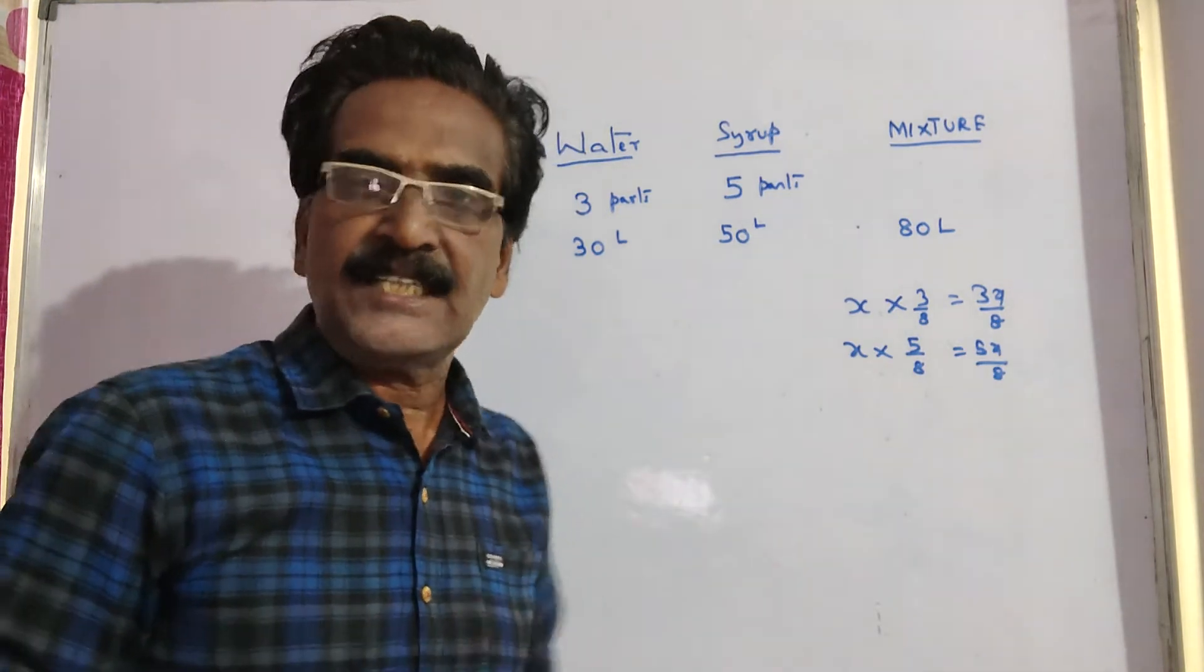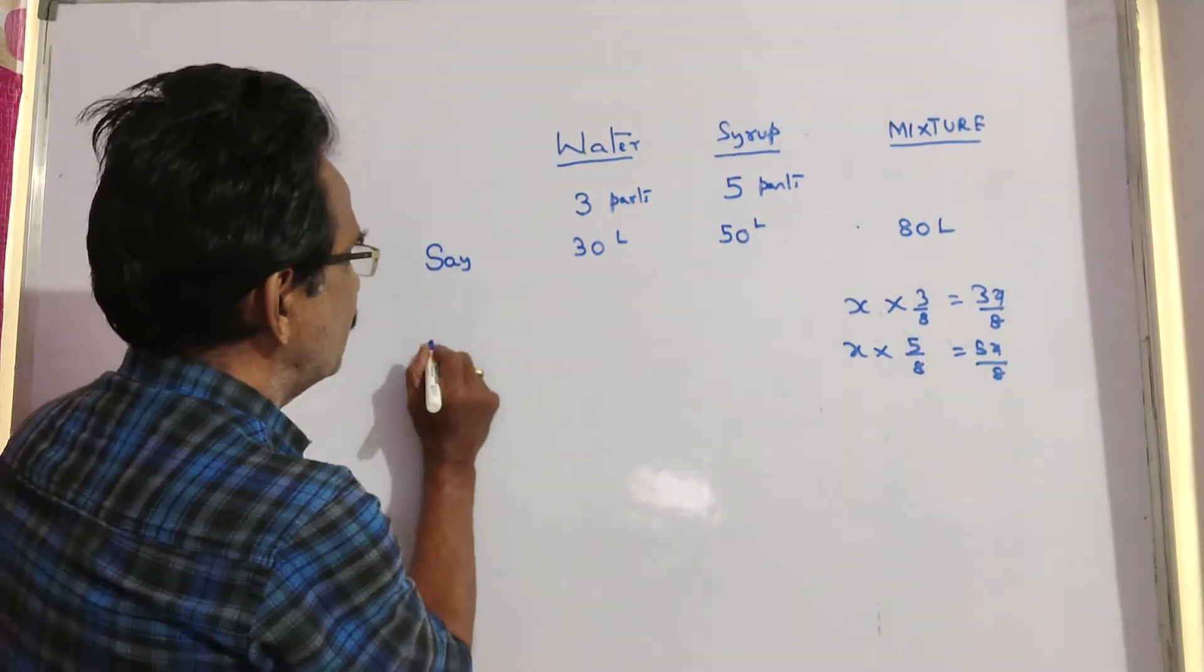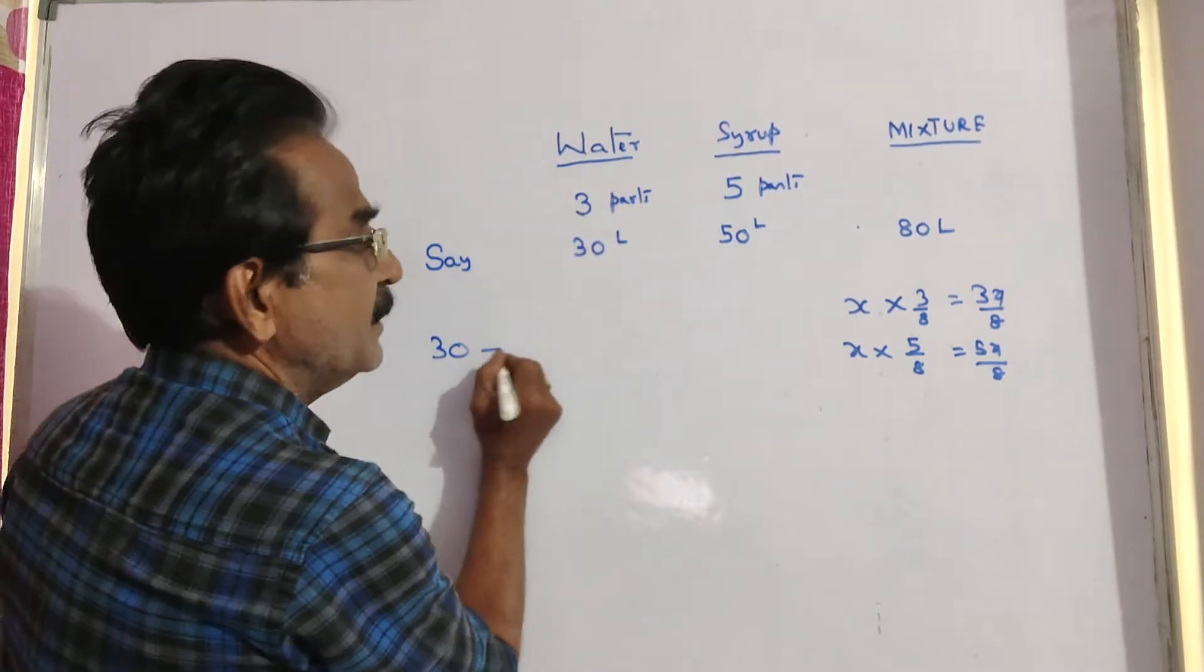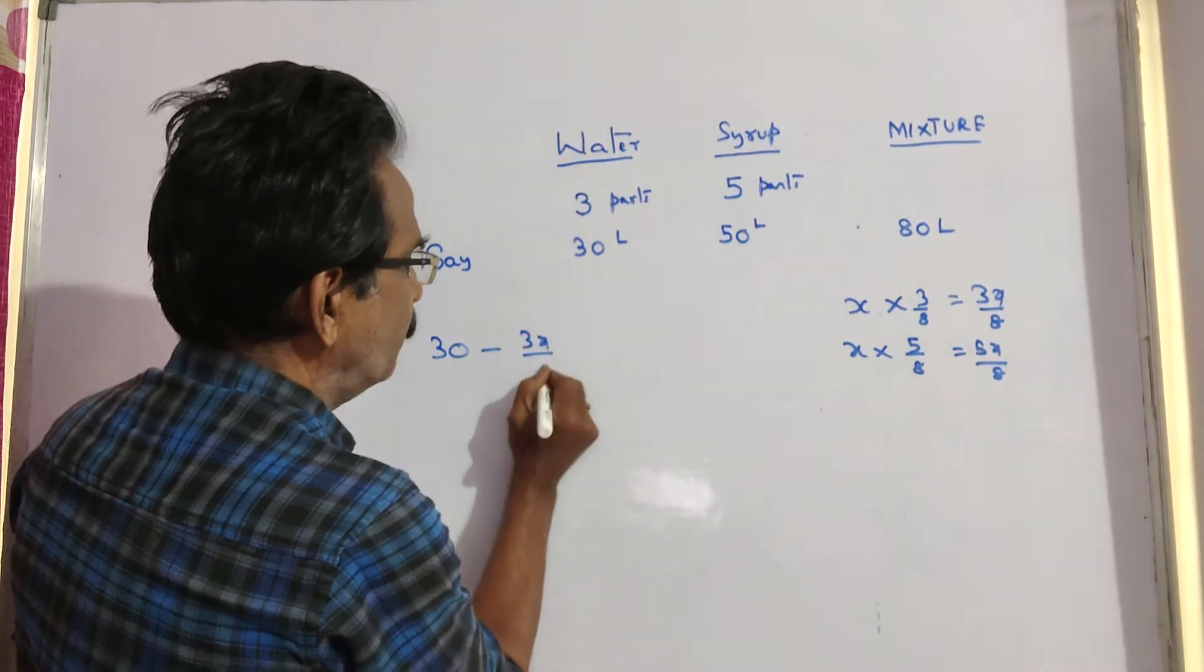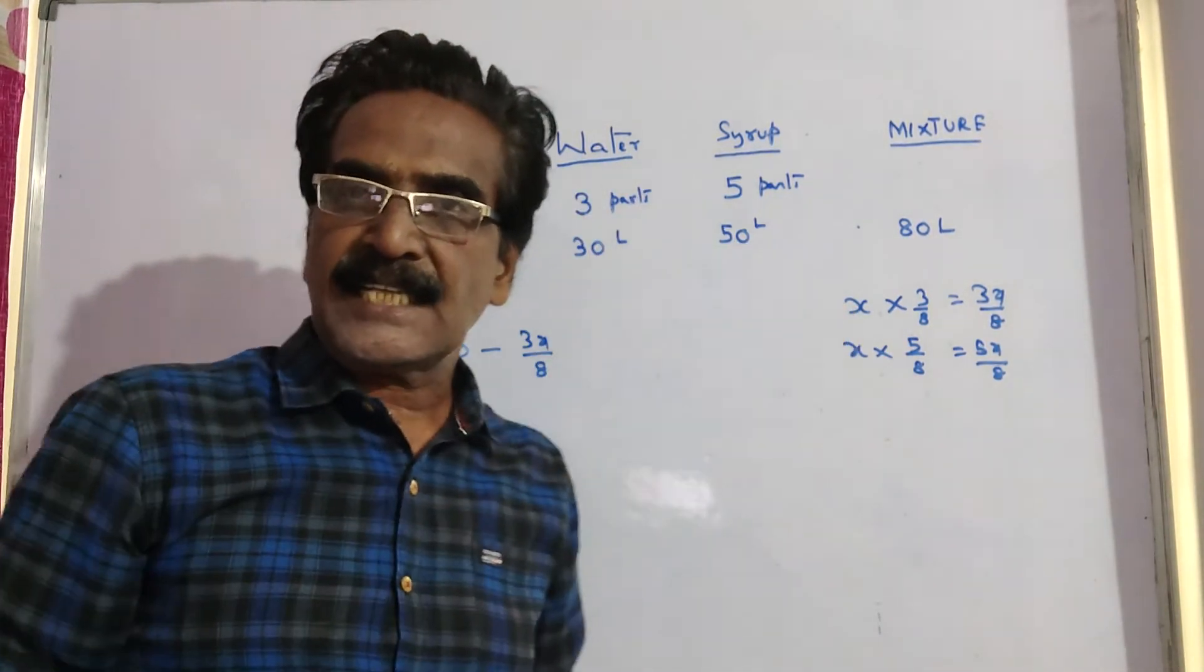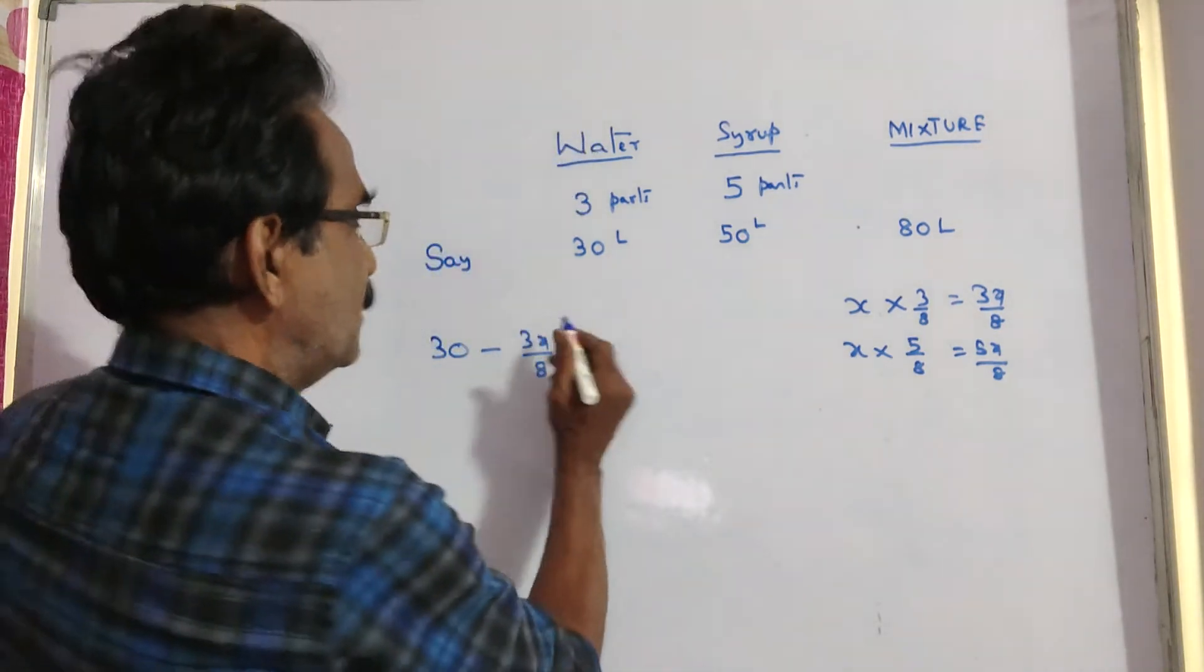Now, let us see the resultant quantities. Initially, there was 30 liters of water and 3x by 8 liters of water is drawn. 3x by 8 liters of water is drawn and x liters of water is replaced.